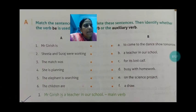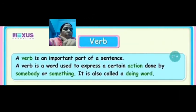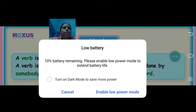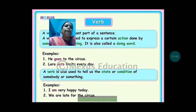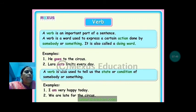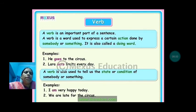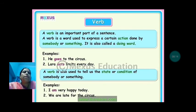Let us revise. A verb is an important part of a sentence. A verb is used to express a certain action done by somebody or something — it is also called a doing word. For example: 'He goes to the circus' — 'goes' is the main verb. 'Lara eats fruits every day' — 'eats' is the main verb. A verb is also used to tell us the state or condition of somebody or something. 'I am very happy today,' 'We are late for the circus' — 'am' and 'are' tell us the state or condition.